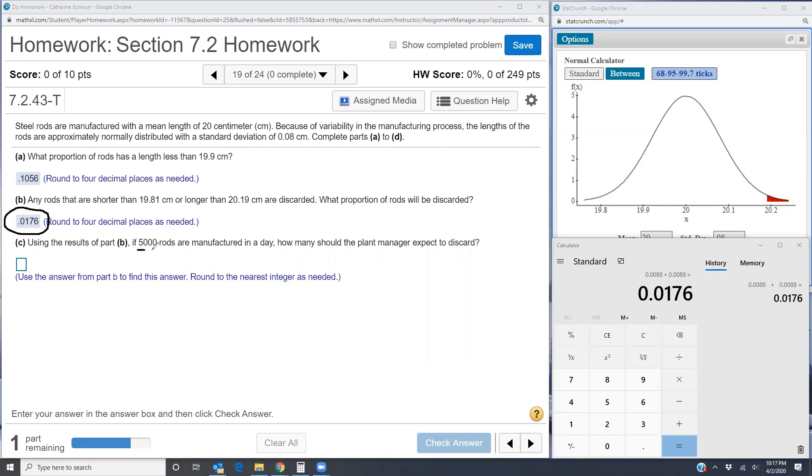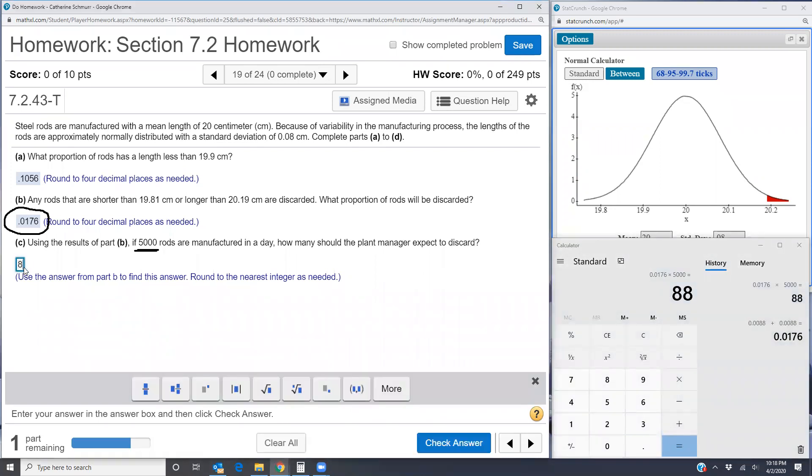If we know that the plant can make 5,000 in a day, then the number that are discarded has to be this proportion 0.0176 of those 5,000. So the way we figure that out is we do 0.0176 times the 5,000 that have been manufactured. That gives us 88 rods are going to be discarded.